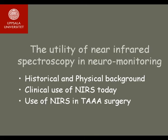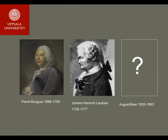Some of the most important scientific contributions in this field were made in the 18th and 19th centuries. Pierre Boucher was a multidisciplinary French scientist with his main interest in naval architecture. In 1729 he published 'Essai d'Optique sur la gradation de la lumière', determining the quantity of light lost by passing through the atmosphere—making him the first known discoverer of what was later named the Beer-Lambert Law.